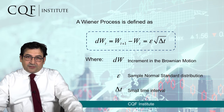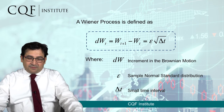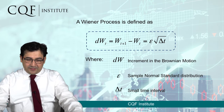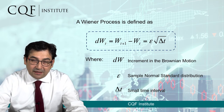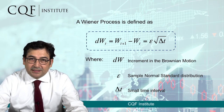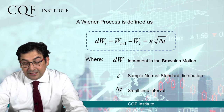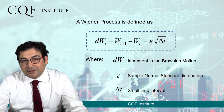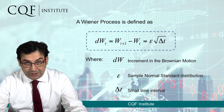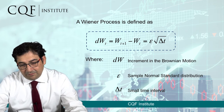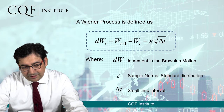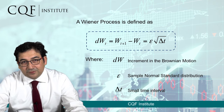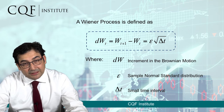A Wiener process is defined mathematically using the formula where dW represents the increment in the Wiener process — that is, the change between one time step and the next. That is why we have W(t+1) minus W(t).